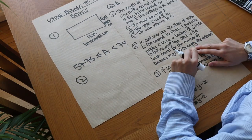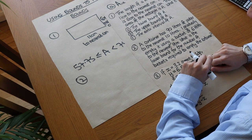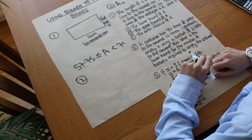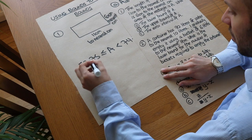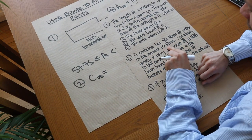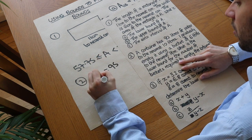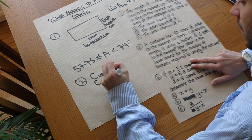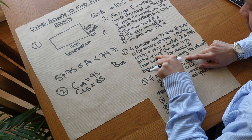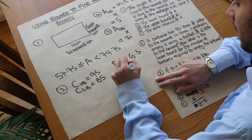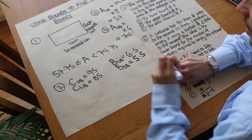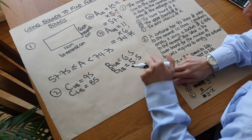Question 2: a container has 90 litres of water to the nearest 10 litres, and I gradually empty it using a bucket of 6 litres to the nearest litre. The upper bound of the container's volume is 90 plus 5 which is 95, and the lower bound is 90 minus 5 which is 85. For the bucket, the upper bound is 6.5 and the lower bound is 5.5. So we have upper and lower bounds for both the container and the bucket.